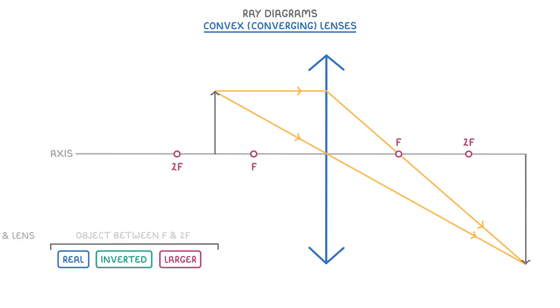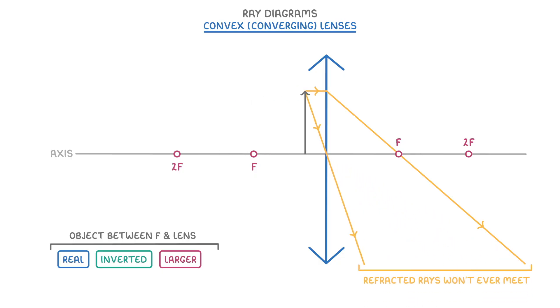The weird one is that if the object is between the focal point and the lens itself, then the refracted rays won't ever meet. So to find our image, we have to trace them backwards using virtual rays. Then we find the point where they meet and draw our image.